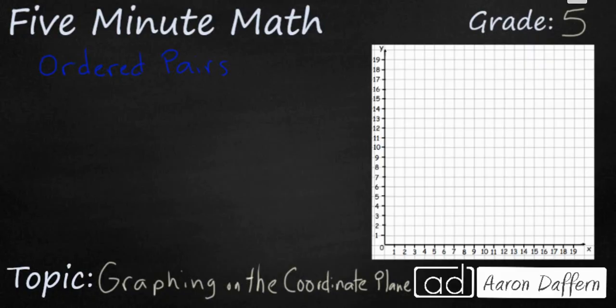So you might have heard this phrase, ordered pairs. And what you might see would be some numbers, two numbers specifically, within parentheses, separated by a comma. So a few examples might be 3, 12, 4, 7, 10, 10, and 0, 3.